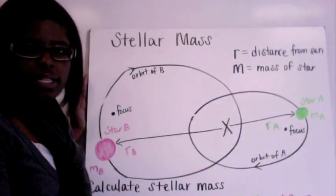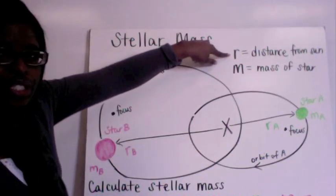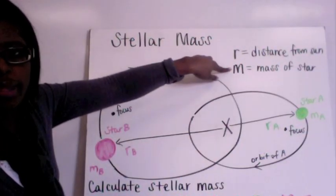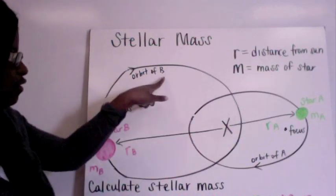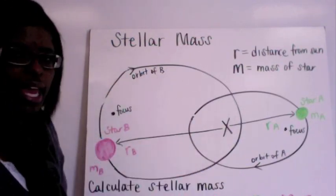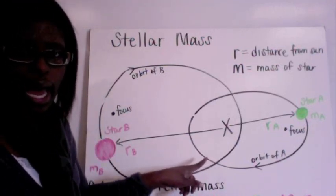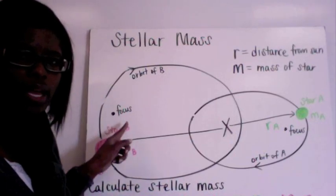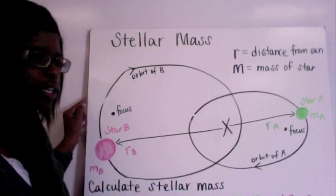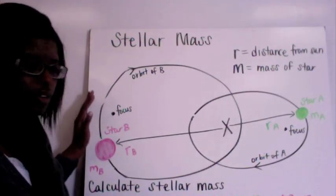So in order to calculate the stellar mass you have to know what R is which is the distance from the Sun and know what the mass of the stars are. So if you look here we have the orbits of star B and the orbits of star A and you notice that star A has a more eccentric orbit than star B because star B's orbit is more round so that means that it's less eccentric.